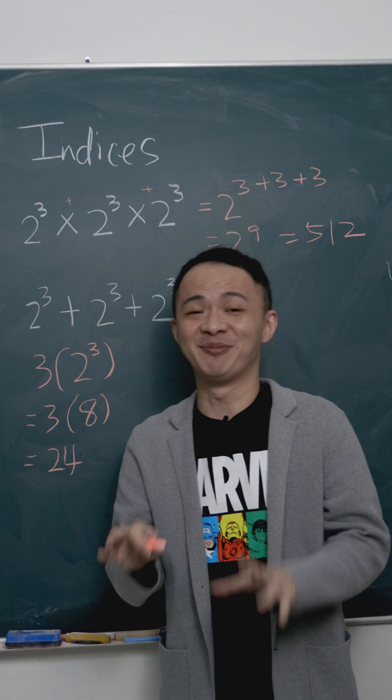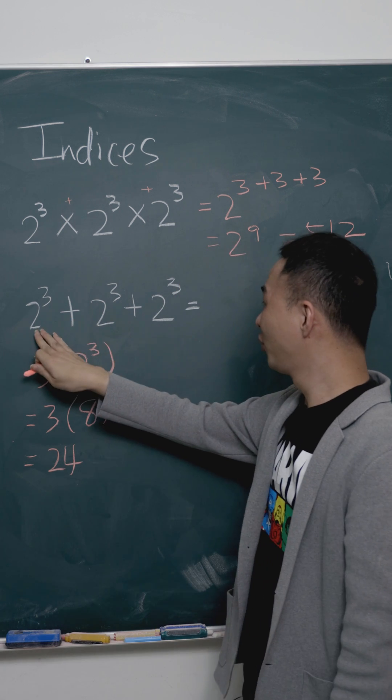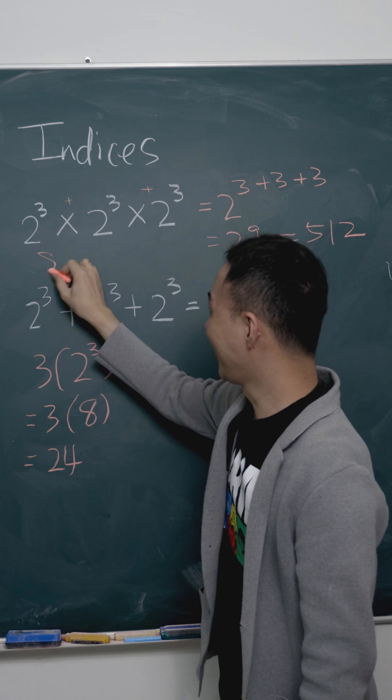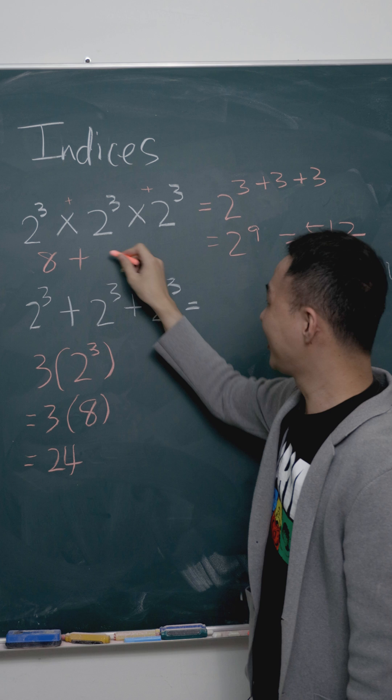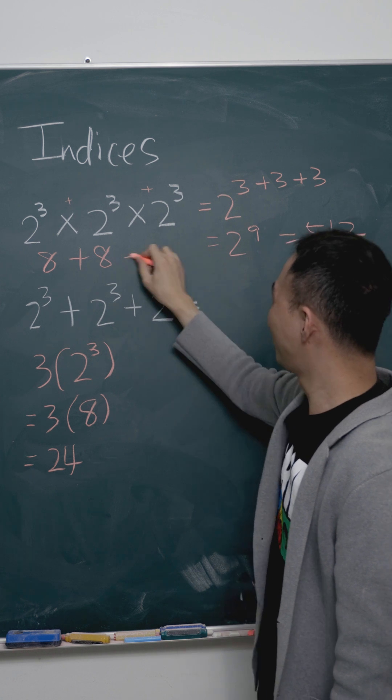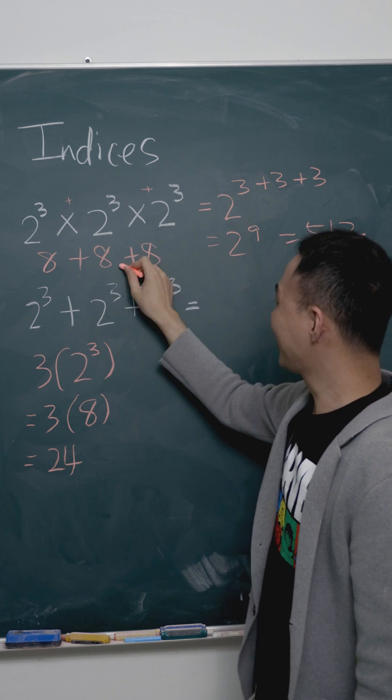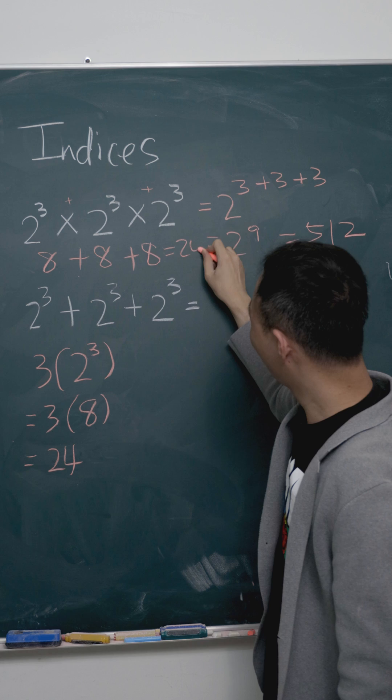If you want to do it separately, you will definitely get the same answer. 2 power of 3 is 8, plus 2 power of 3 is 8, plus 2 power of 3 is 8. 8 plus 8 plus 8, you still get back 24.